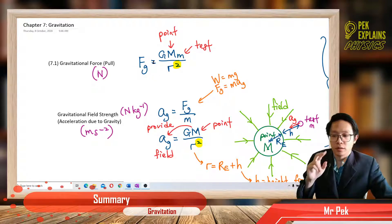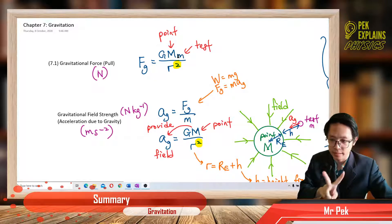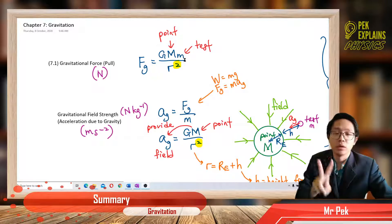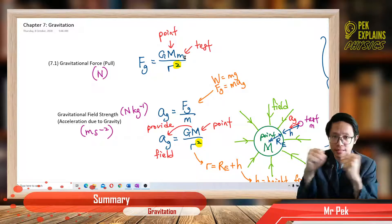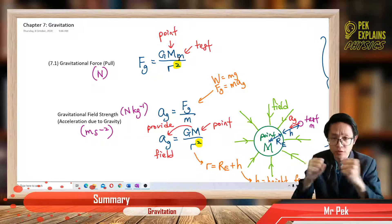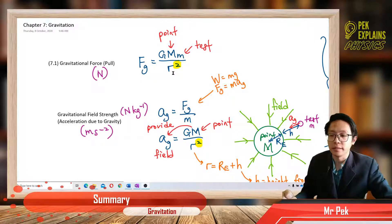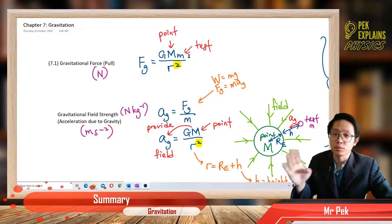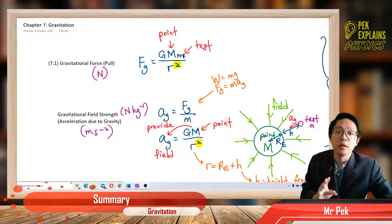For gravitational force, you must have two masses. You must have two masses — then only does the attractive force exist between them. They are called the point mass and the test mass. R is the distance from point mass to test mass; in detail, it is from the center of the point mass to the center of the test mass.